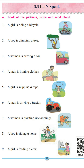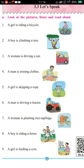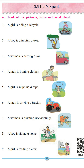Number 1: A girl is riding a bicycle. Number 2: A boy is climbing a tree. Number 3: A woman is driving a car. Number 4: A man is ironing clothes. Number 5: A girl is skipping a rope. Number 6: A man is driving a tractor. Number 7: A woman is planting rice saplings. Number 8: A boy is riding a horse. Number 9: A girl is feeding a cow. So what are the action words here? What are the verbs? Riding, climbing, driving, ironing, skipping, driving, planting, riding and feeding.